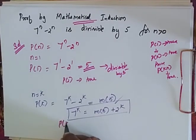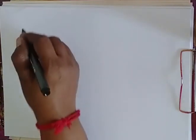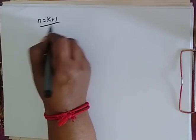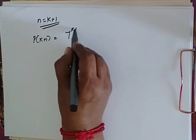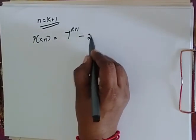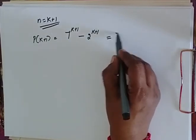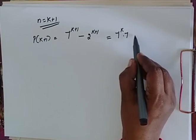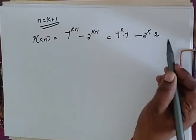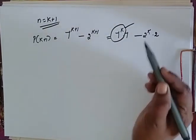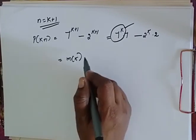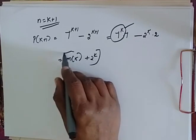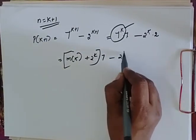Now P(k) is also true. We have to prove that it is true for k+1. That is when n is equal to k+1. Now P(k+1) is equal to 7^(k+1) minus 2^(k+1). So this can be written as 7^k into 7 minus 2^k into 2. I have found 7^k in terms of 2^k, so now I am going to replace that with some multiple of 5 plus 2^k.